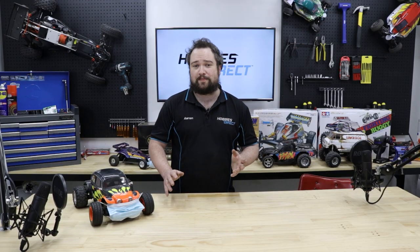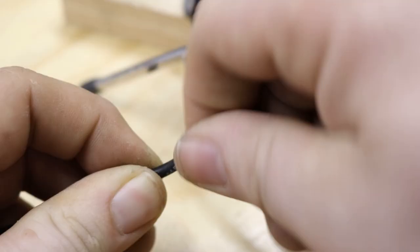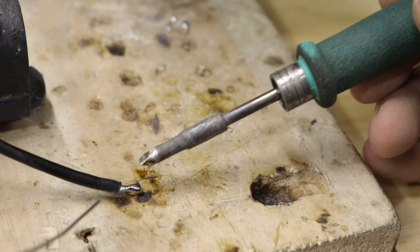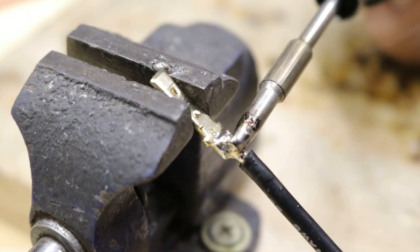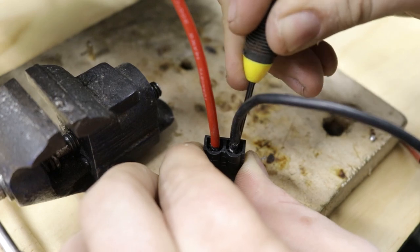Now onto the negative, which is the same process as the positive that we just did. Strip the wire. Twist the wire. Coat the wire with solder. Add some solder to the negative contact. Join them together by adding heat. Push the contact into the housing.